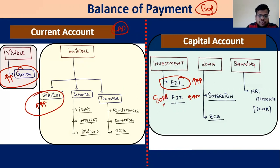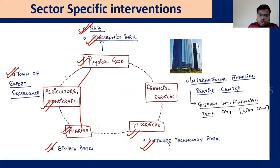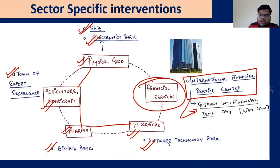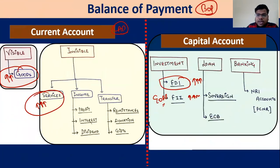Many specialized institutions have been created to increase exports and ease of doing business. For physical goods there are: Special Economic Zones, Electronics Parks, Agricultural and Handicraft Towns of Export Excellence, Pharma and Biotech Parks, and IT/Software Technology Parks. But for financial services, we did not have such a dedicated zone — so we created the International Financial Service Center. The first IFSC has been created in Gujarat: the Gujarat International Finance Tec-City, or GIFT City.